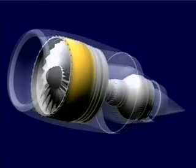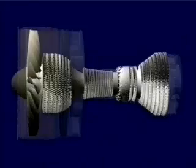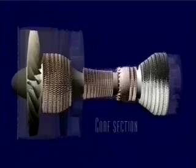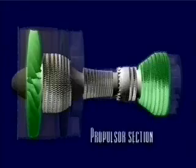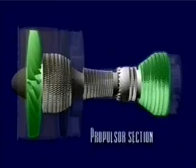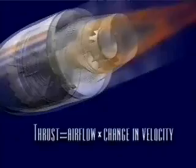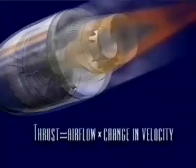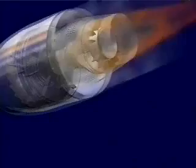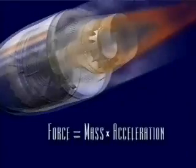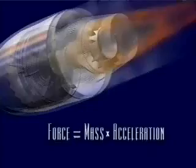The turbofan engine is a complex synchronization of several components working together as two parts: a core section that produces power to drive the propulsor section that produces thrust. Thrust is a force created by the acceleration of air. This phenomenon is simply an application of Newton's second law of motion, commonly expressed as force equals mass times acceleration. It is this force that propels the aircraft.